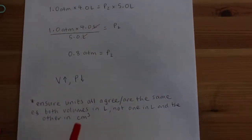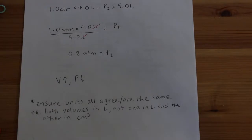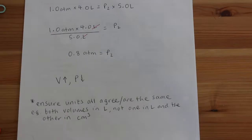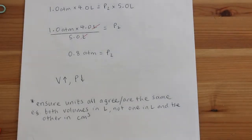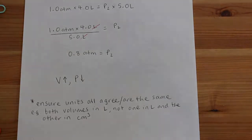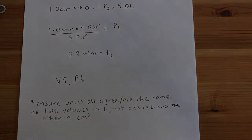One last thing to note: you need to ensure that the units all agree — they're all the same. Both volumes in this question were given in liters. It's really important to make sure the units of volume agree and the units of pressure agree. So both should be in liters, not one in liters and the other in centimeters cubed. Similarly, both pressures should be in the same unit — for example, both in atmospheres and not one in atmospheres and one in kilopascals.